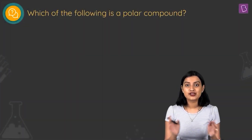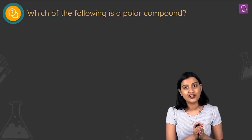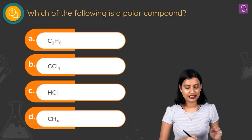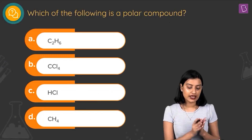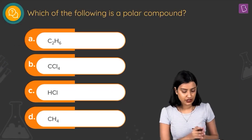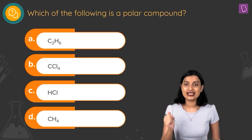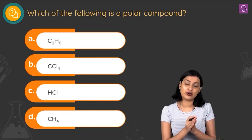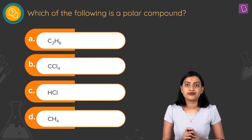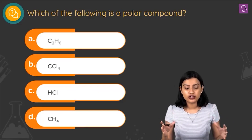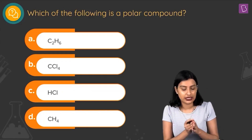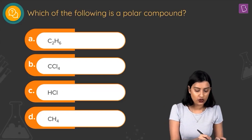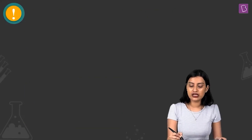The next question asks which of the following is a polar compound. The options are: C2H6 (ethane), CCl4 (carbon tetrachloride), HCl (hydrogen chloride), and CH4 (methane). We need to figure out which of these is polar in nature.